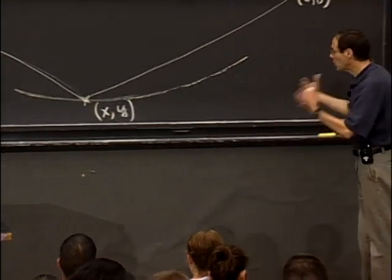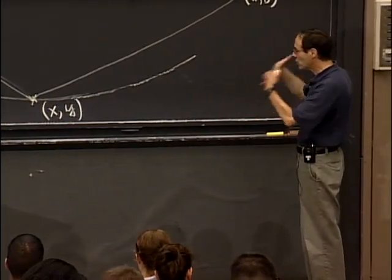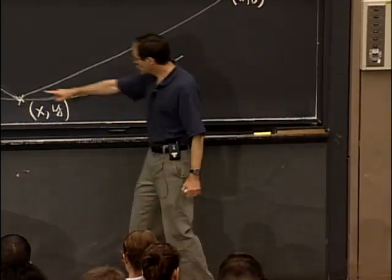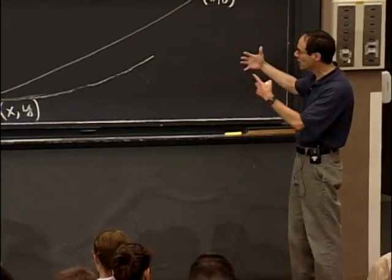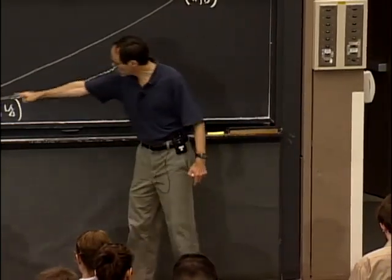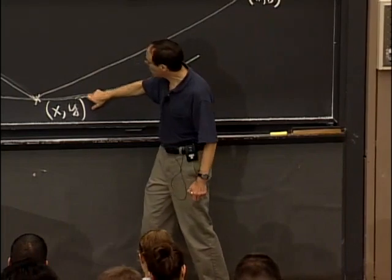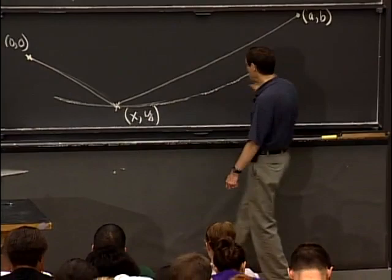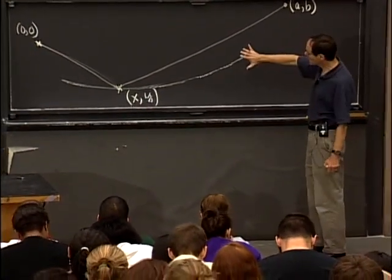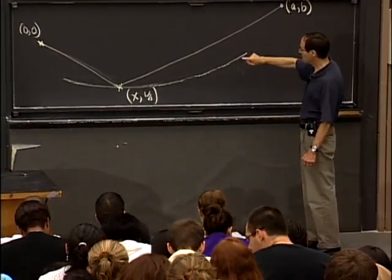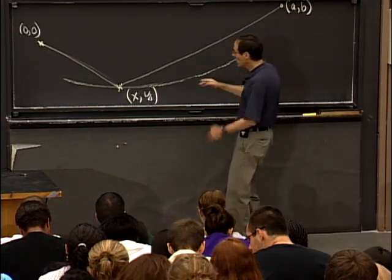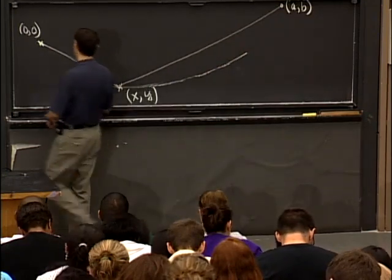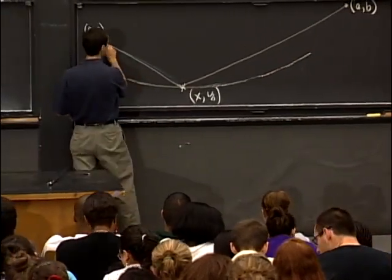So now we need a little bit more language in order to describe what it is that we've got. And the constraint curve, we got it in a particular way. Namely, we strung some string from here to there. And what happens at all of these points is that the total length of the string is the same. So one way of expressing the constraint is that the length of the string is constant. And so in order to figure out what the constraint is, what this curve is, I have to describe that analytically.